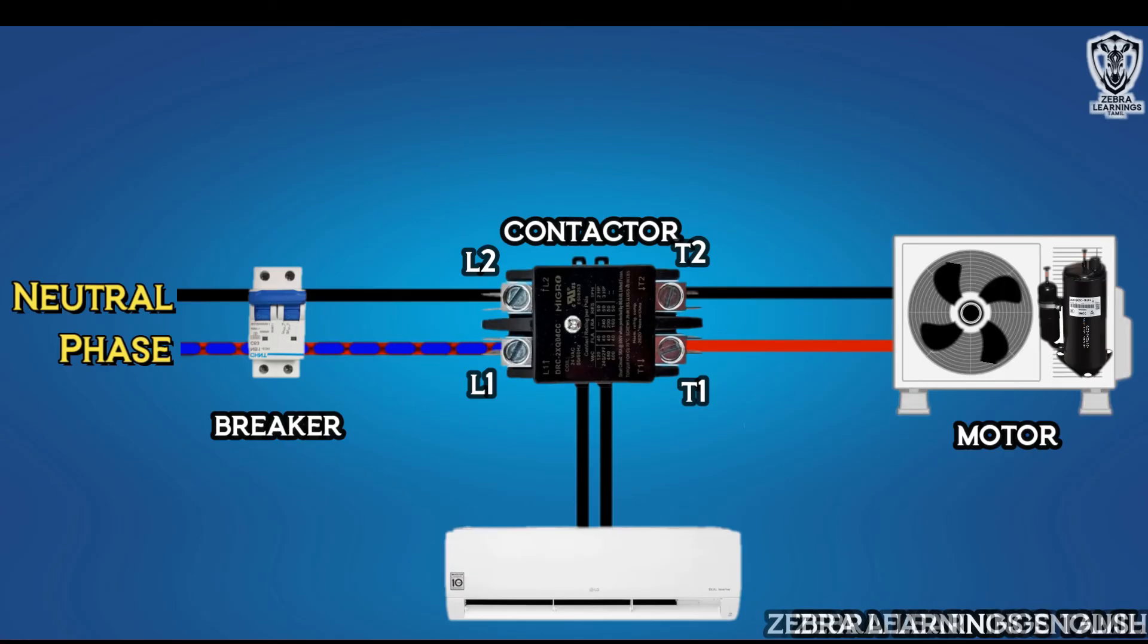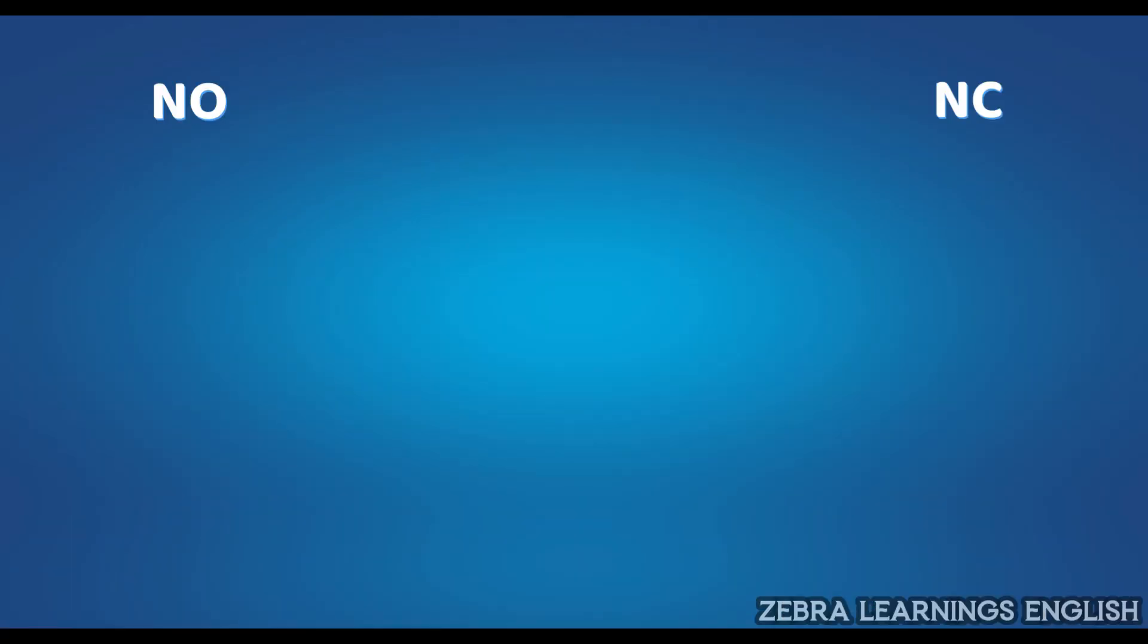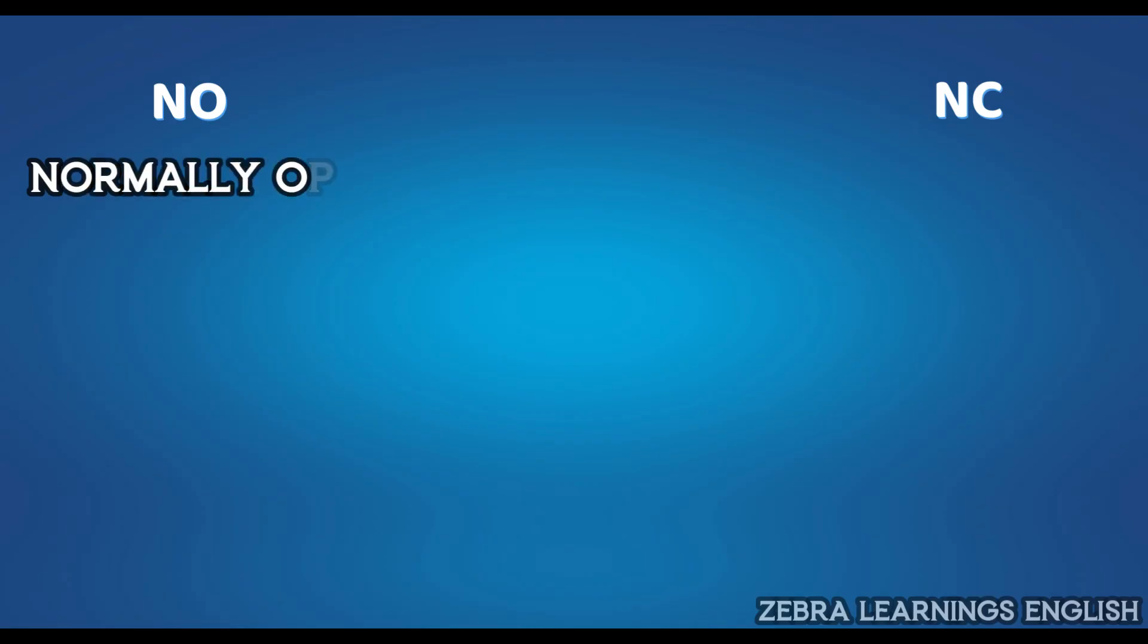Contactors are of two types, NO and NC. NO contactor means normally open contactor. That is, if no power supply is given to the coil, the contactor will be normally open. No electricity passes through it. So it is a normally open contactor.